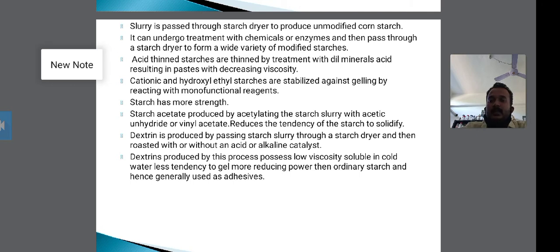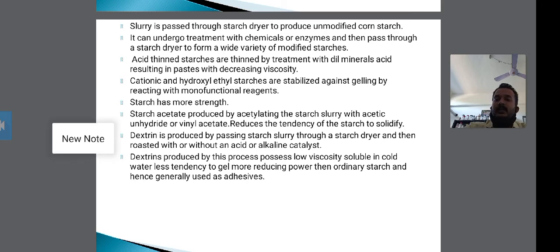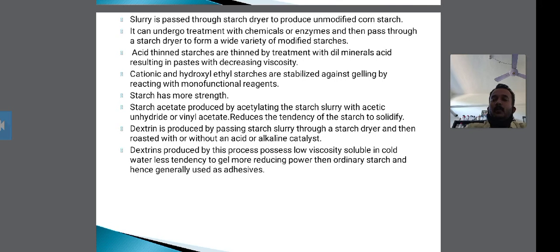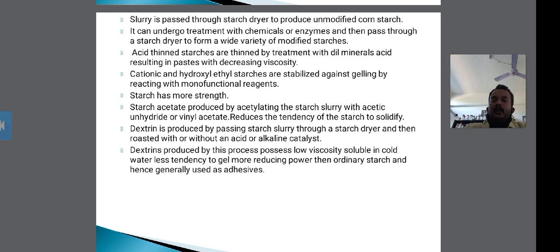Cationic and hydroxyethyl starches are stabilized against jelling by reacting with a monofunctional reagent, giving the starch more strength. Starch acetate is produced by acetylating the starch slurry with acetic anhydride or vinyl acetate, which reduces the tendency of the starch to solidify.